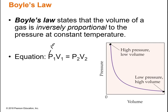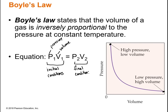On a graph, Boyle's Law shows high pressure at low volume and low pressure at high volume. The equation we use—assuming constant temperature—is P₁V₁ = P₂V₂, where P is pressure and V is volume. The subscript 1 represents initial conditions and subscript 2 represents final conditions. Most gas laws we cover will have this pattern of initial and final conditions.